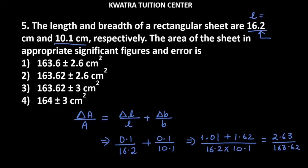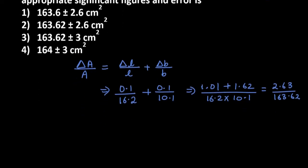So how much is the area? L into B. The area is 163.62 cm squared. And if you round off this, it will give you 164 cm squared. And we have the value here, del A.